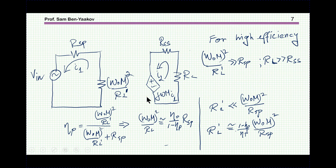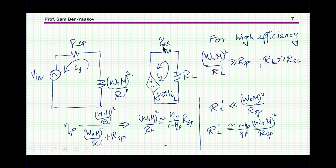The reflected resistor represents the total power consumption of the system, since I₁² times R_L′ is indeed the power delivered to the load. This simplifies the analysis: we can look at the primary and optimize the circuit in terms of the reflected value for efficiency and power transfer. For high efficiency, we want the reflected resistance to be much larger than the parasitic resistance on the primary, and similarly on the secondary we want R_L to be larger than the parasitic resistance.